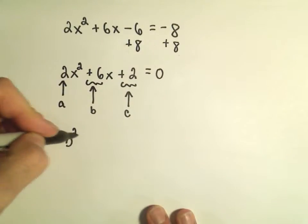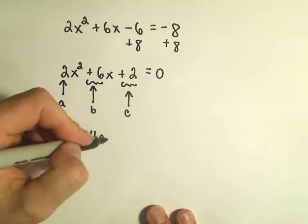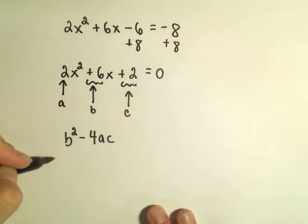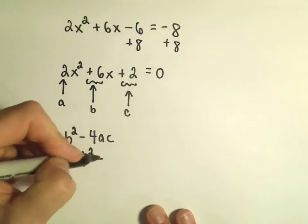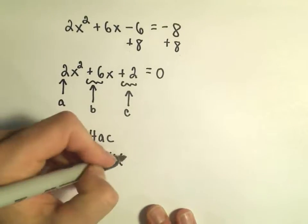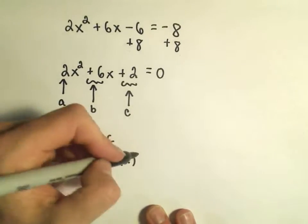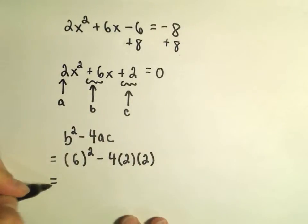So, when we fill in the b squared minus 4ac, the discriminant, we're going to end up getting, so we'll have b, which is 6 squared, minus 4 times a, which is 2, times c, which is also 2.